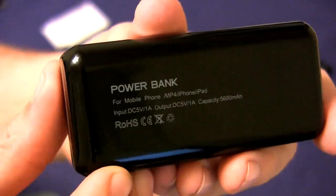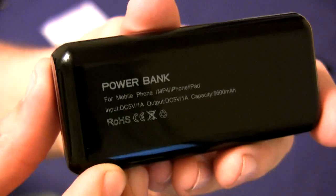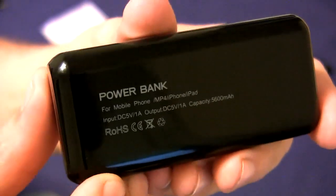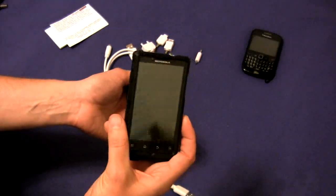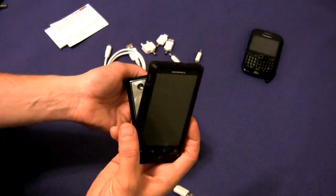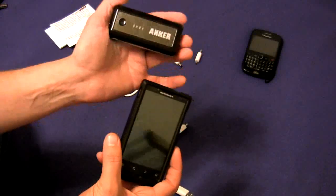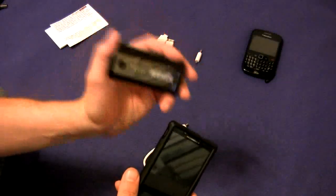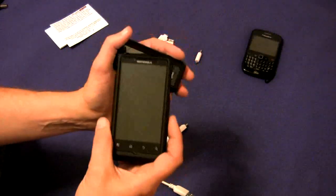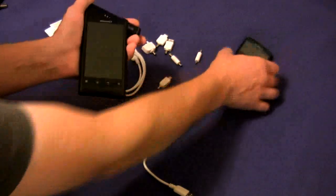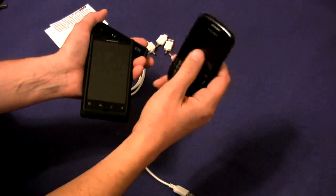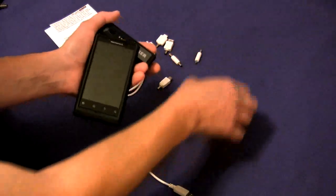So input DC 5 volt. I think it's actually 5.3 volts on the output, but one amp, as you can see right there. The battery in my Android phone is a 1380 milliamp hour battery. This is 5600. If you do the math, this is four times. So I can charge this phone four times off of this one battery, which is really good. The same applies for my Blackberry. It has a 1380 milliamp hour battery in it as well.